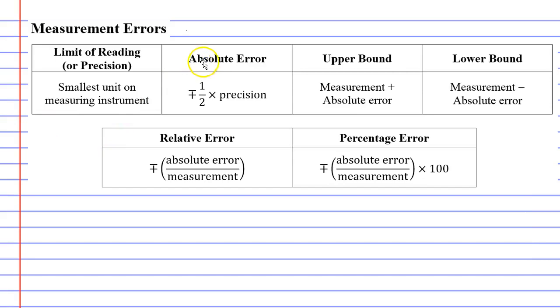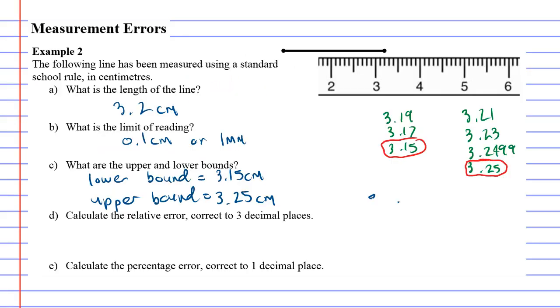Question D: absolute error. Absolute error is half times the precision, or half times the limit of reading. So absolute error is half times, or the same as dividing by 2, times 0.1.